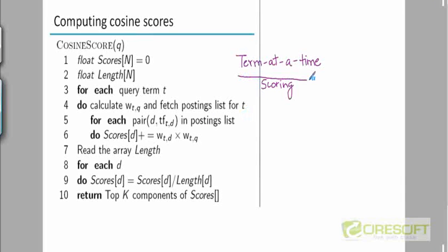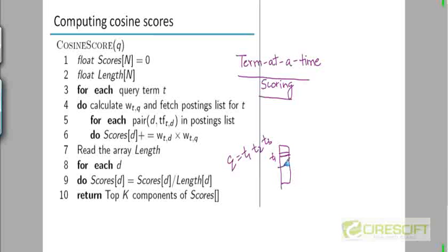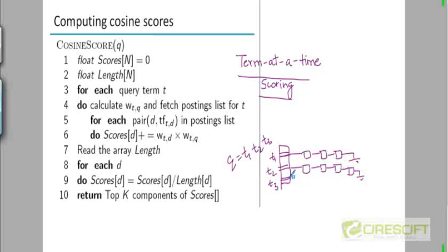In term-at-a-time scoring, we have a query with three terms t1, t2, and t3. These terms appear in the dictionary, and each has a postings list which is a sequence of doc IDs in increasing order of doc ID value. Likewise, you have a postings list for t2 and so on.